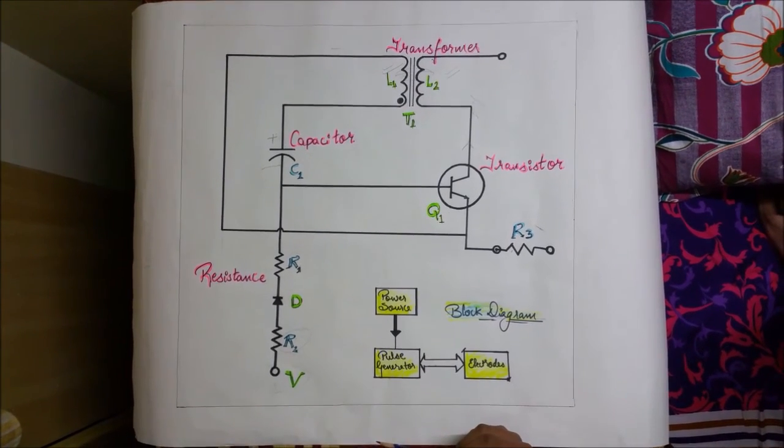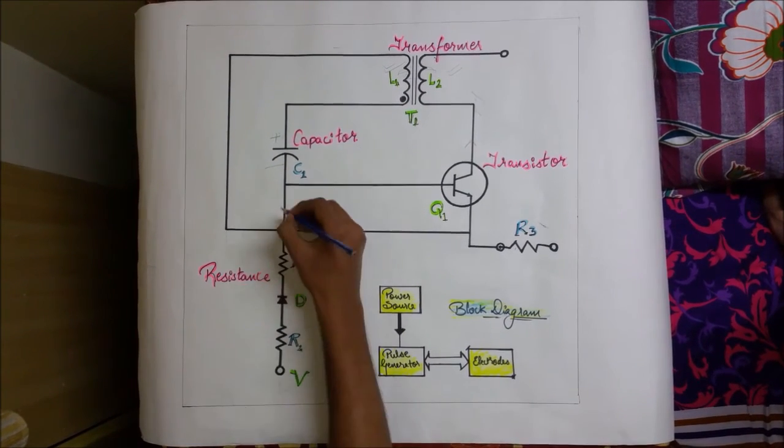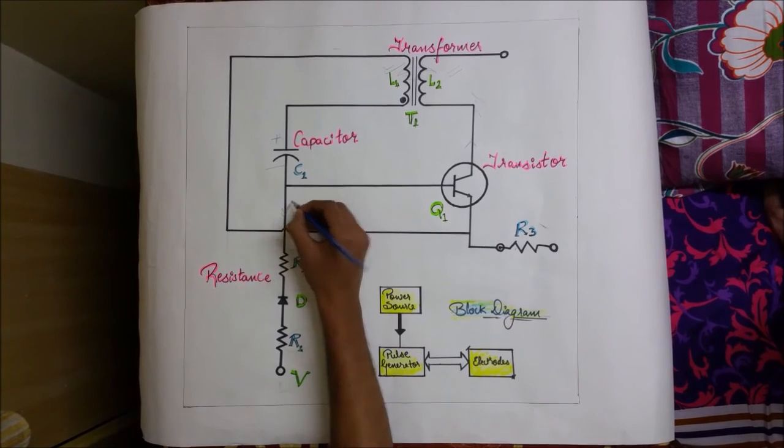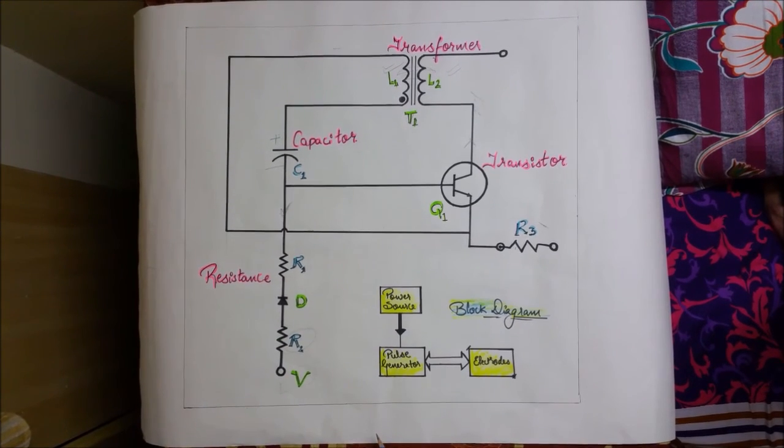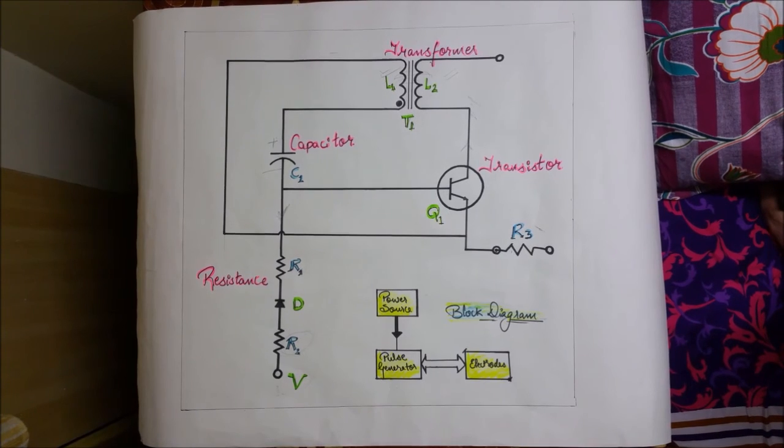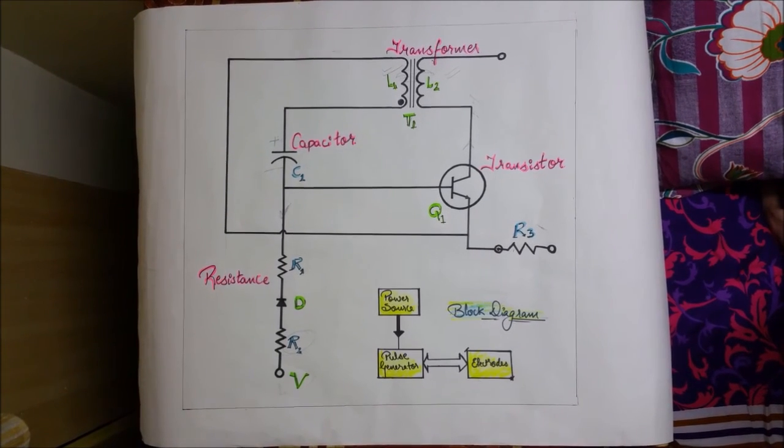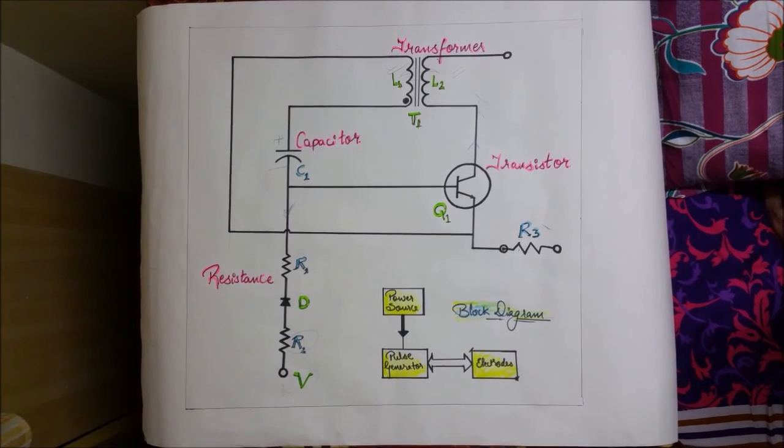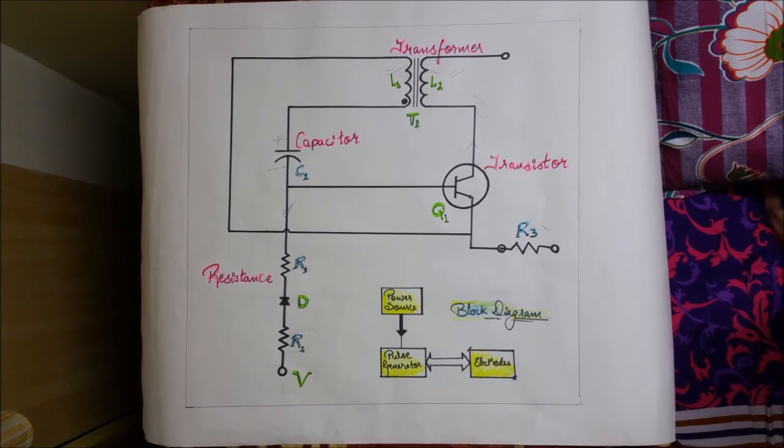At this moment, C1 will now discharge through R1 and cut off Q1. Hence, collector current stops and as a consequence, the voltage across L2 returns to zero. This is the pulse period. The length of time between T1 and T2 is the relaxation period.